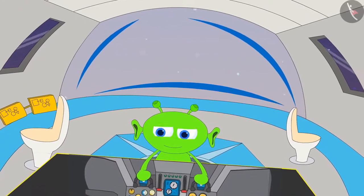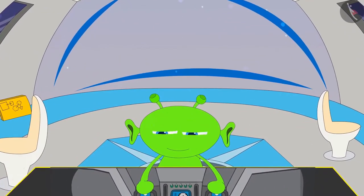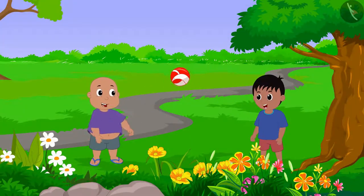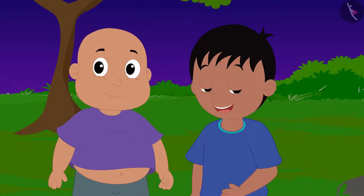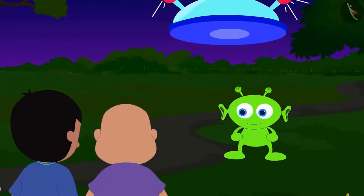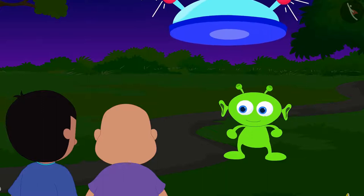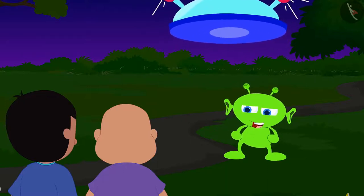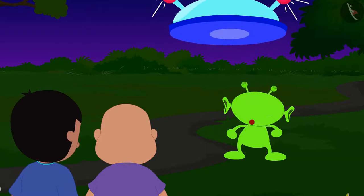The alien is going to meet Raju and Bablu today with his flying saucer. Raju and Bablu were playing in the park when the alien also reached there. Raju and Bablu are very happy to see the alien. The alien told them that today he will take them to a unique world, but he has one condition. Raju and Bablu will have to solve two of his puzzles.